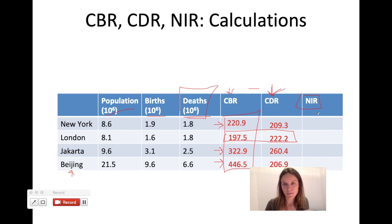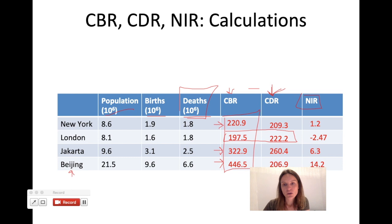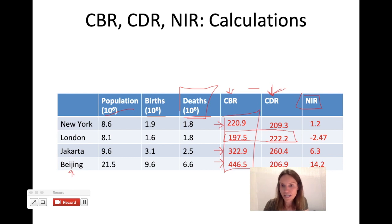To calculate natural increase rate, take birth rate minus death rate, then divide by 10 to get a percentage. For New York you should have gotten 1.2; for London, negative 2.47; for Jakarta, 6.3; and for Beijing, 14.2. Now we know not only the births and deaths as a ratio, but which city is growing fastest — obviously Beijing, at a staggering 14.2% per year, though I did make up these numbers.